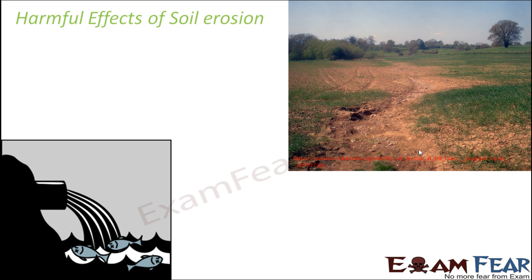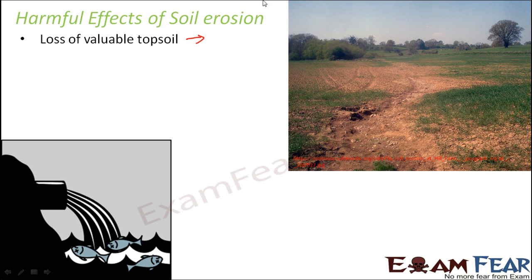So let us quickly look at the harmful effects of soil erosion — what can happen if the upper layer of soil gets washed away. The first disaster is that we are losing the valuable top soil, because this top soil, these top layers, are rich in minerals, rich in humus, rich in nutrients. We are losing this layer, and that in itself is a huge loss.